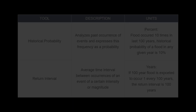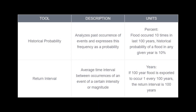In summary, remember that historical probability refers to the likelihood of an event occurring based on historical data. It is calculated by analyzing past occurrences of the event and expressing this frequency as a probability by dividing the number of times an event has occurred by the total number of observations. For example, if a flood has occurred 10 times in the last 100 years, the historical probability of a flood in any given year is 10%.